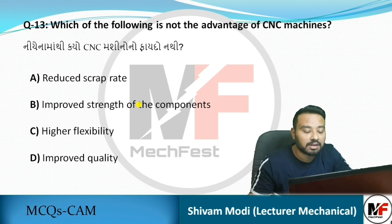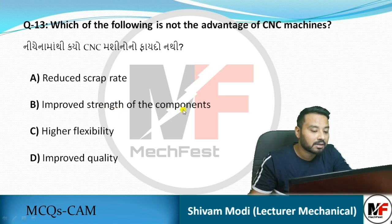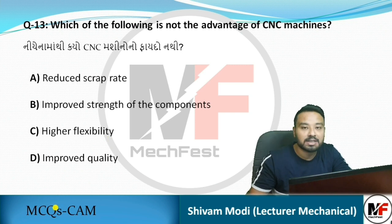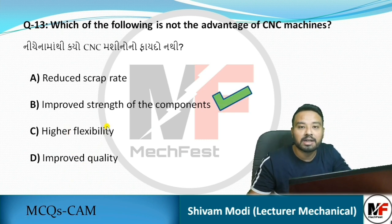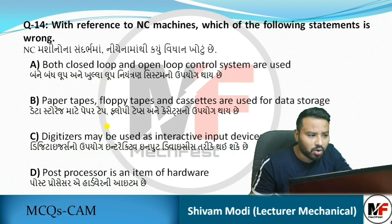Next MCQ: Which of the following is NOT an advantage of CNC machines? Looking at the options: reduced scrap rate – that is an advantage; improved strength of the component – that does not seem like an advantage of CNC; higher flexibility – that is an advantage since a variety of products can be made; improved quality – that is also an advantage. So the answer is B – improved strength of the component is not an advantage of CNC, because component strength depends on the material, not the CNC machine.